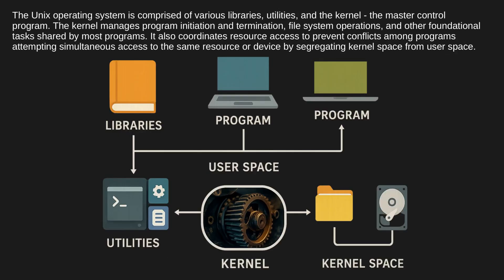Developed by AT&T, both Unix and the C programming language were widely distributed to academic and government institutions, subsequently leading to their porting across diverse machine families. The Unix operating system is comprised of various libraries, utilities, and the kernel — the master control program. The kernel manages program initiation and termination, file system operations, and coordinates resource access to prevent conflicts, segregating kernel space from user space.